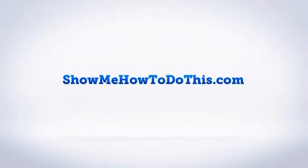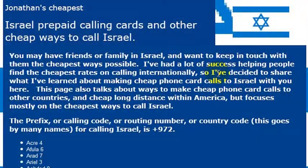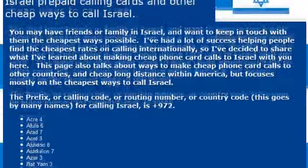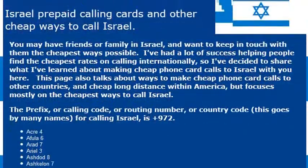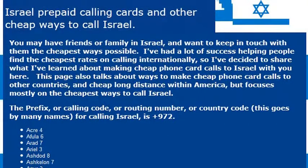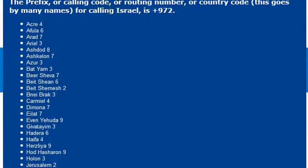Israel is probably one of the most fascinating countries to visit in the world, simply because it is at the center of conflict and controversy quite frequently. When I go, I'm going to need to make some phone calls there to make sure my hotel reservations are taken care of, and to make sure the friends I'm connecting with know where to meet me. So when I want to make that call, I will need to know the international country code for Israel, which is 972.